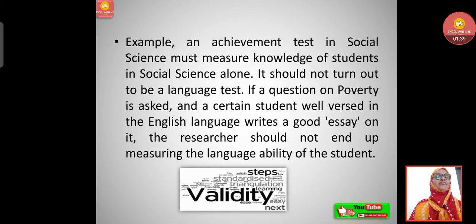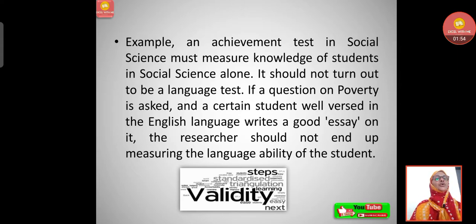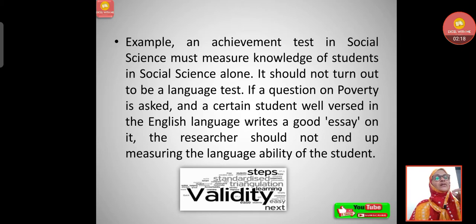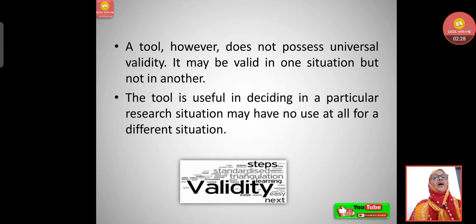For example, an achievement test in social science must measure knowledge of students in social science alone — it should not turn out to be a language test. If a question on poverty is asked and a student well-versed in English writes a good essay, the researcher should not end up measuring the student's language ability. The knowledge related to poverty is what should be assessed, not language ability.